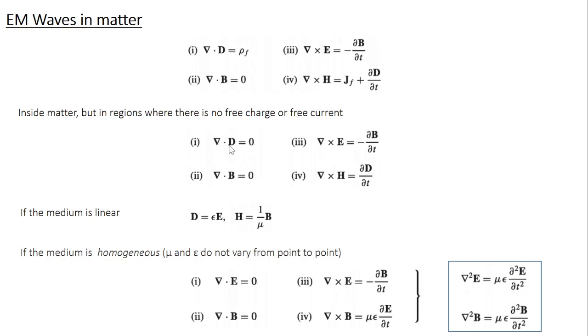So you have divergence of D equal to 0, divergence of B equal to 0, curl of E equal to minus dou B by dou T, and curl of H equal to dou D by dou T.